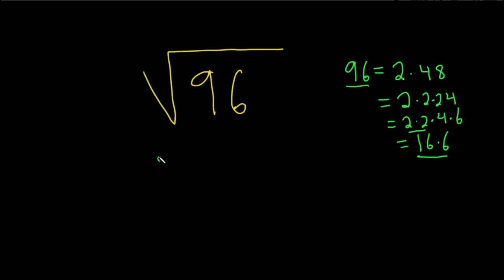So now what we can do is come back over here. And then you just replace the 96 with 16 times 6. And since it's a product, we can break it up as the square root of 16 times the square root of 6.